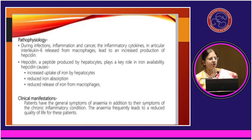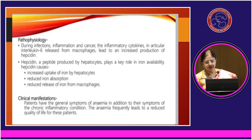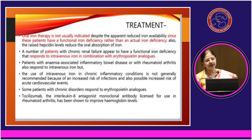The pathophysiology of anemia of chronic inflammation involves inflammation causing increased release of interleukin-6 from macrophages, which leads to increased production of hepcidin. Hepcidin plays an important role in iron availability — when hepcidin is increased, iron absorption is decreased, causing anemia. Treatment consists of IV iron therapy plus treatment of the underlying disease. Chronic renal failure patients respond to erythropoietin analogs, and tocilizumab, the interleukin-6 antagonist, has a role in improving hemoglobin levels.